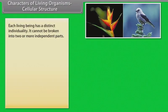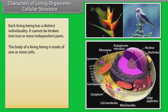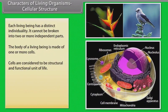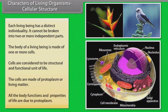Each living being has a distinct individuality and it can be broken into two or more independent parts. The body of a living being is made of one or more cells. Cells are considered to be the structural and functional unit of life. The cells are made of protoplasm, or living matter. All the body functions and properties of life are due to protoplasm.